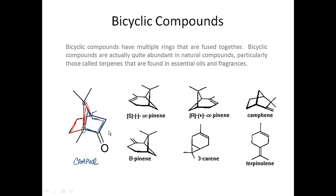You'd think that fusing rings together would make these molecules pretty rare, but actually they're not. If you've used a perfume or cologne, you most likely have smelled compounds that are fused together. These bicyclic compounds actually occur quite a bit in different natural compounds. Sometimes these are called terpenes, and they're found in essential oils and fragrances — certainly in perfumes and even in sodas, as flavoring or fragrant ingredients.